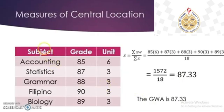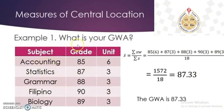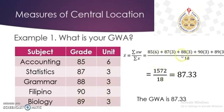For example, if we have this data and we are asked to compute the general weighted average, we have the raw data and we multiply it by the units. So: 85 times 6, 87 times 3, 88 times 3, 90 times 3, and 89 times 3. The total weight is 6 plus 3 plus 3 plus 3 plus 3, which equals 18.